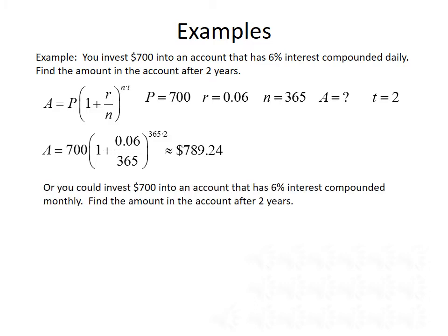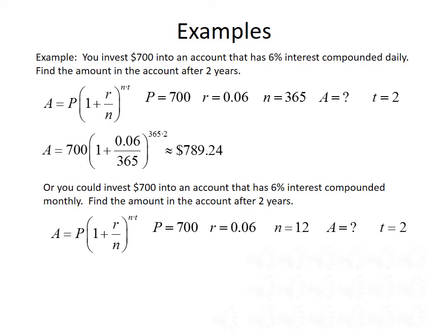Here's another option: we could invest that $700 into an account that has 6% interest rate compounded monthly. Find the amount in the account after two years. P is 700, R is 0.06, N is 12, A is unknown, and T equals 2. Plugging into the formula, A equals 700 times 1 plus 0.06 over 12, all raised to the 12 times 2 power, which gives us $789.01. Comparing the two results, we make just a little bit more money if the interest is compounded daily.